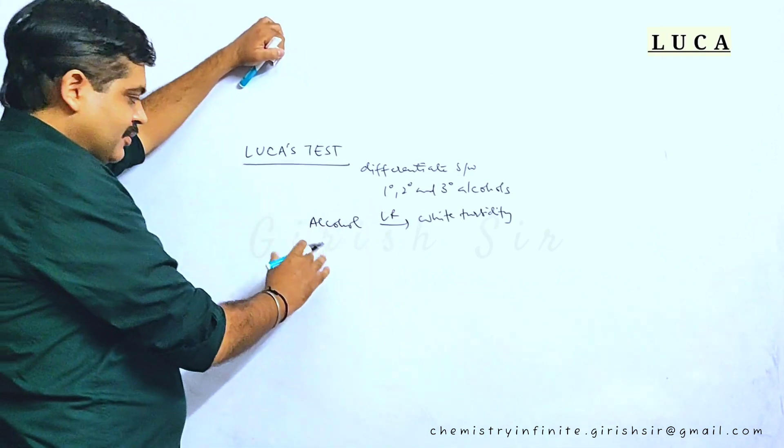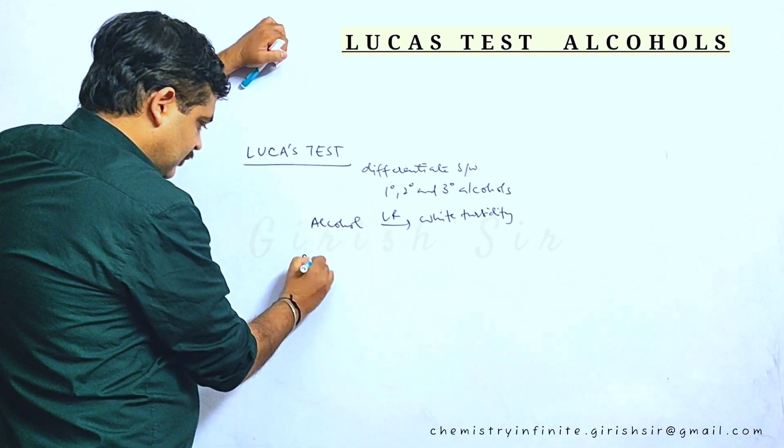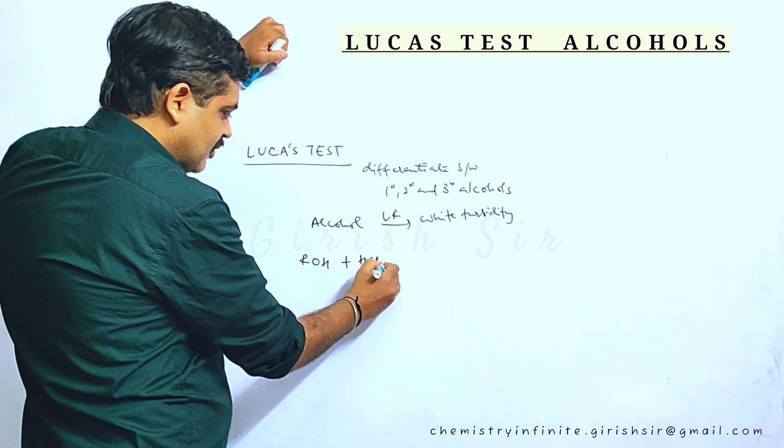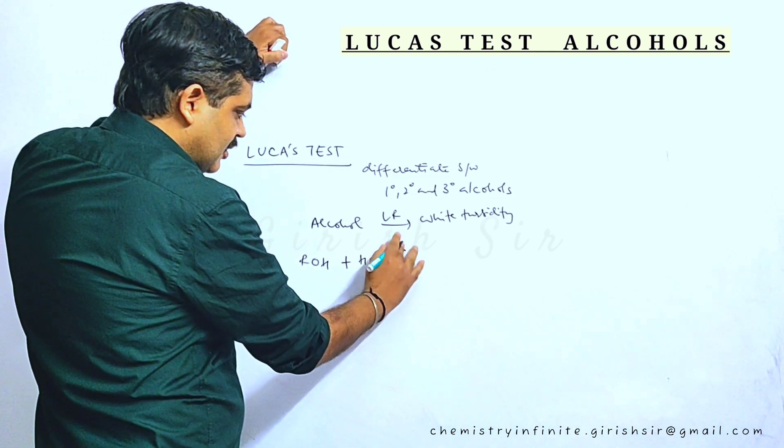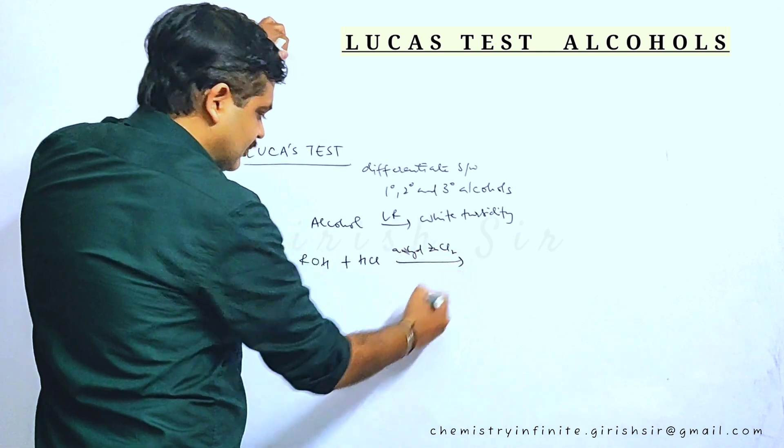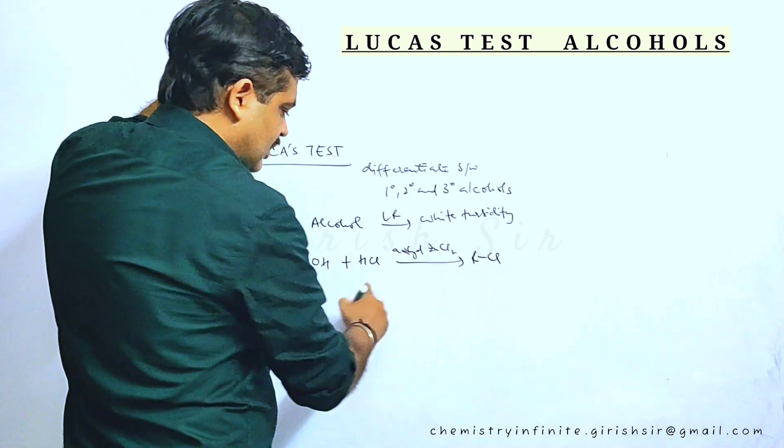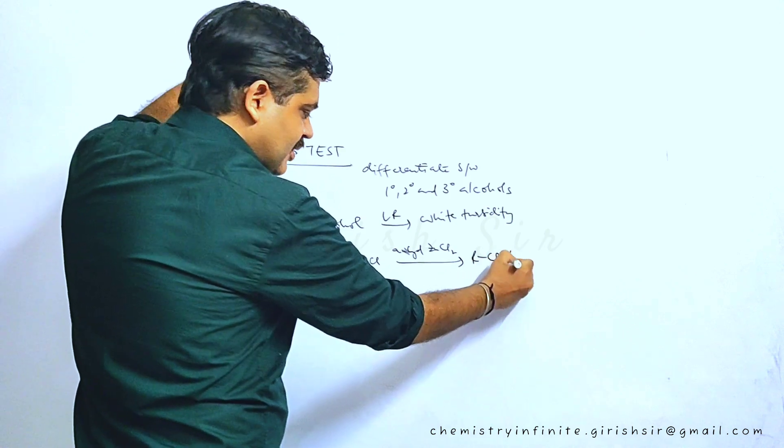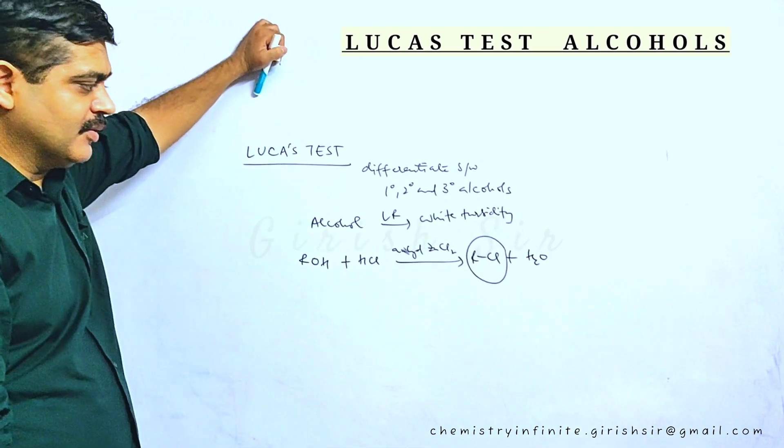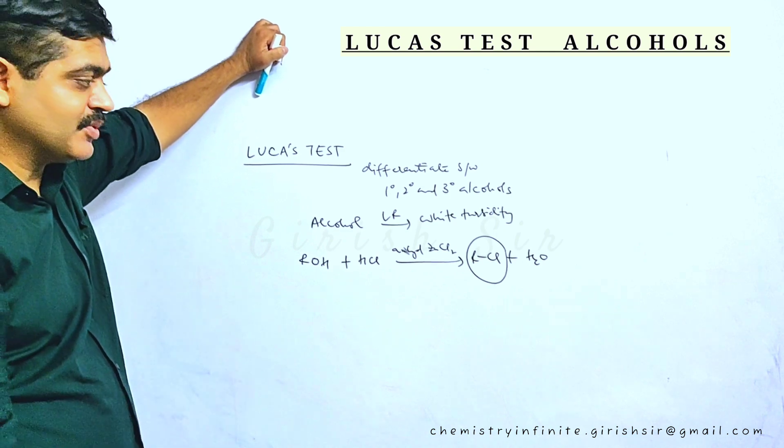Let's see the reaction here. I take an alcohol and treat with Lucas reagent, which is a mixture of HCl concentrated and anhydrous zinc chloride. The reactant produces alkyl chloride. Due to formation of alkyl chloride, white turbidity is seen in the solution.